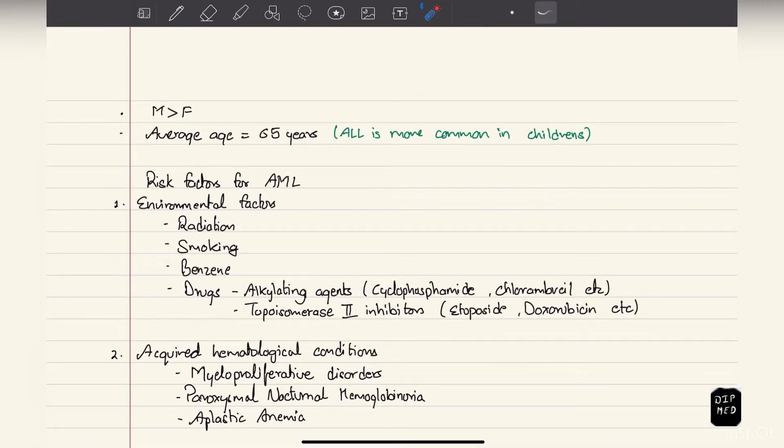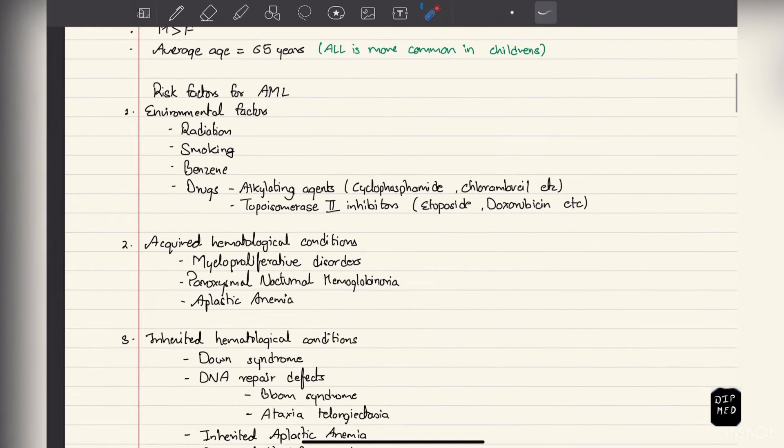AML is seen more in males than females, which is the same in case of ALL. The average age is 65 years, so it's usually seen in elderly people. But ALL is more common in children.